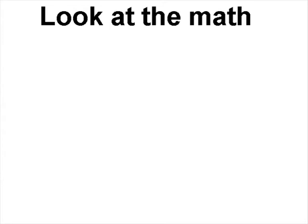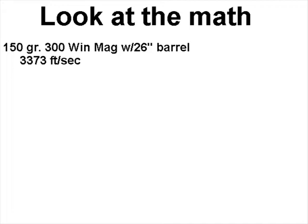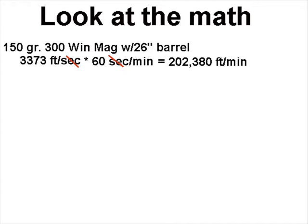So what does all this mean? Let's look at an example and do some math. Taking a 150 grain bullet with a 300 Win Mag and a 26 inch barrel, we may get a velocity of around 3,373 feet per second. There are 60 seconds in a minute, so working out the math gives us 202,380 feet per minute. The units check out — seconds cancel top and bottom.